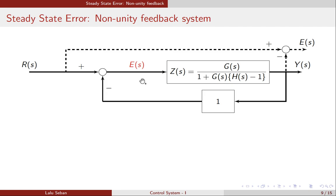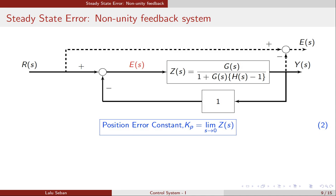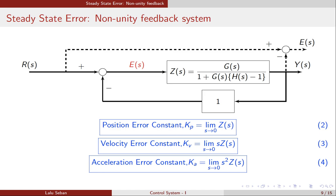The combined transfer function will be g(s) divided by [1 + g(s)·(h(s) − 1)], which we will call z(s). We have thus quickly transformed the non-unity feedback system into an equivalent unity feedback system. The solution is now very straightforward. We can use Kp, Kv, and Ka as the error constants: Kp equals the limit as s tends to 0 of z(s); Kv equals the limit as s tends to 0 of s·z(s); and Ka, the acceleration error constant, equals the limit as s tends to 0 of s²·z(s).